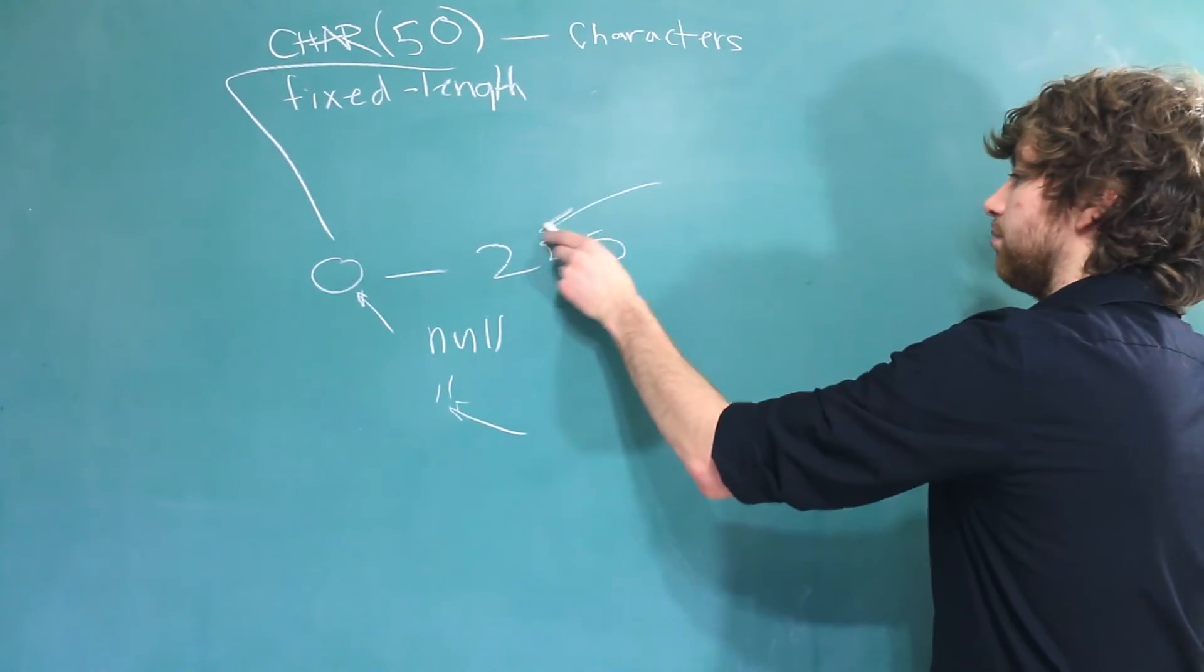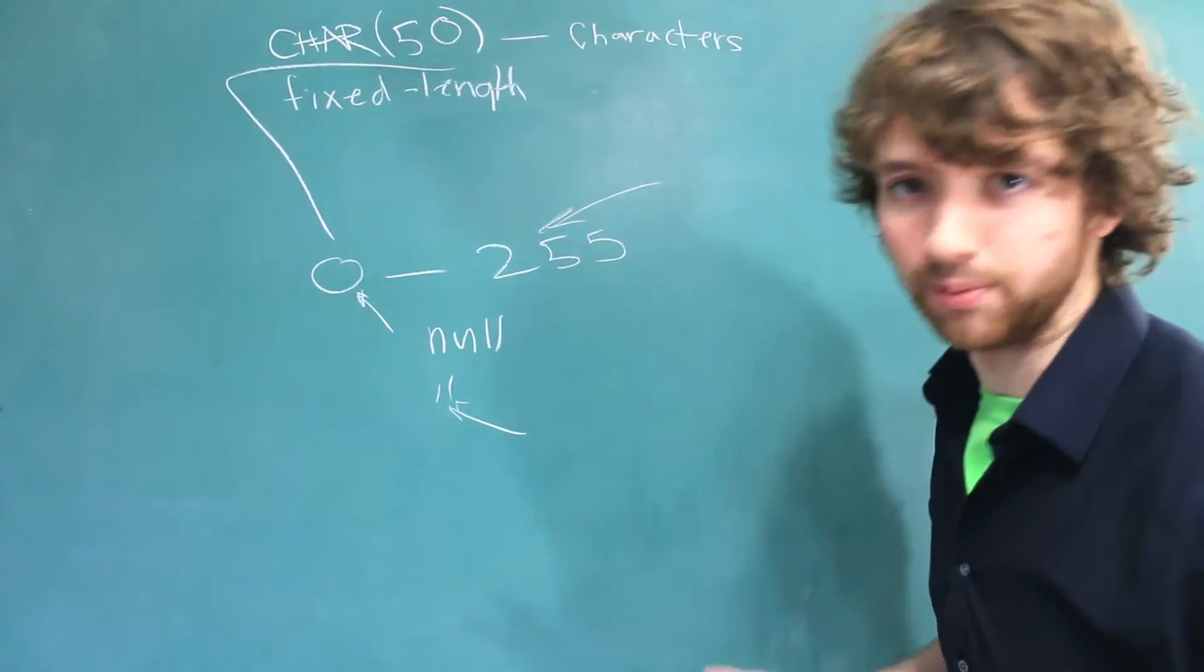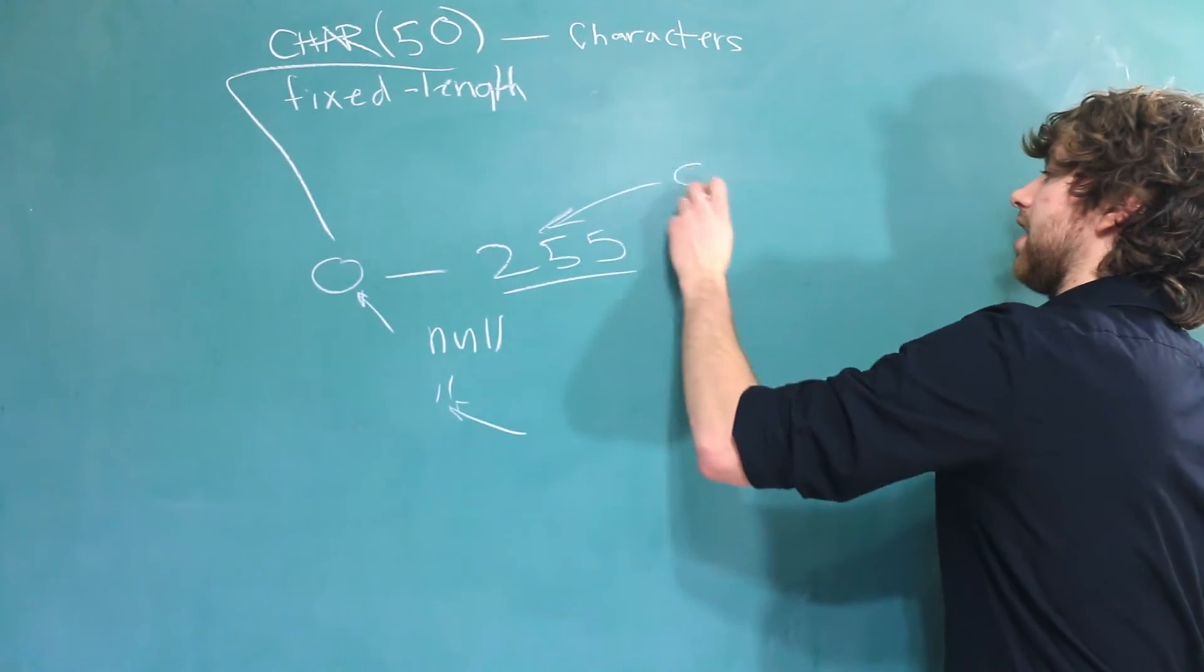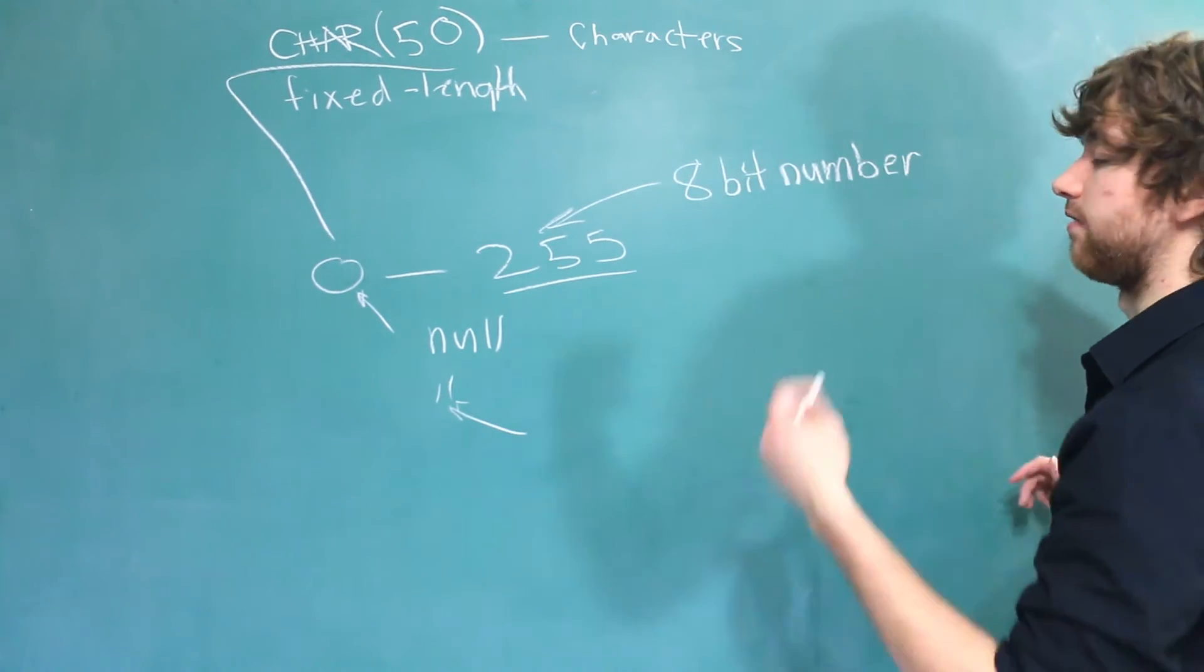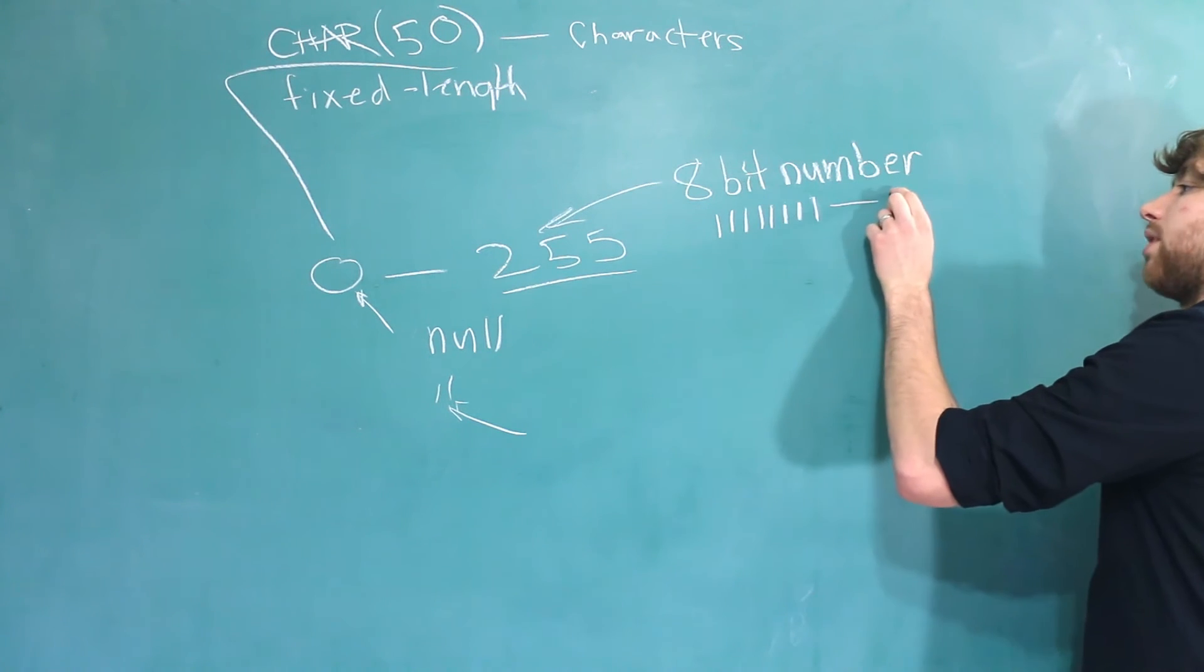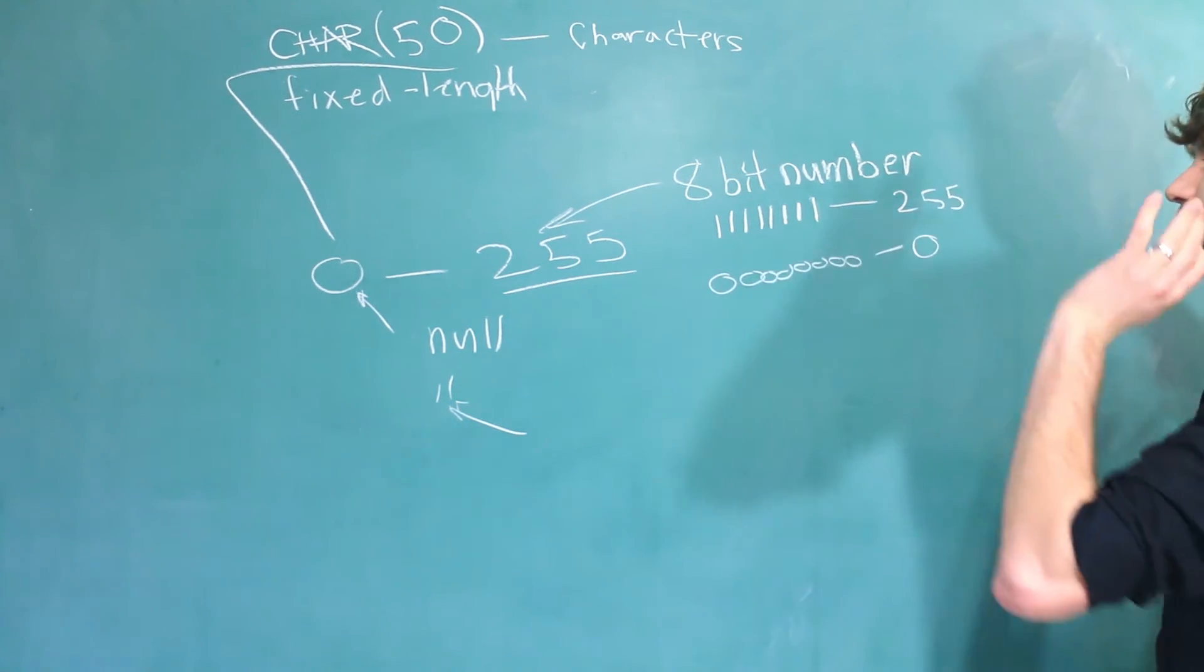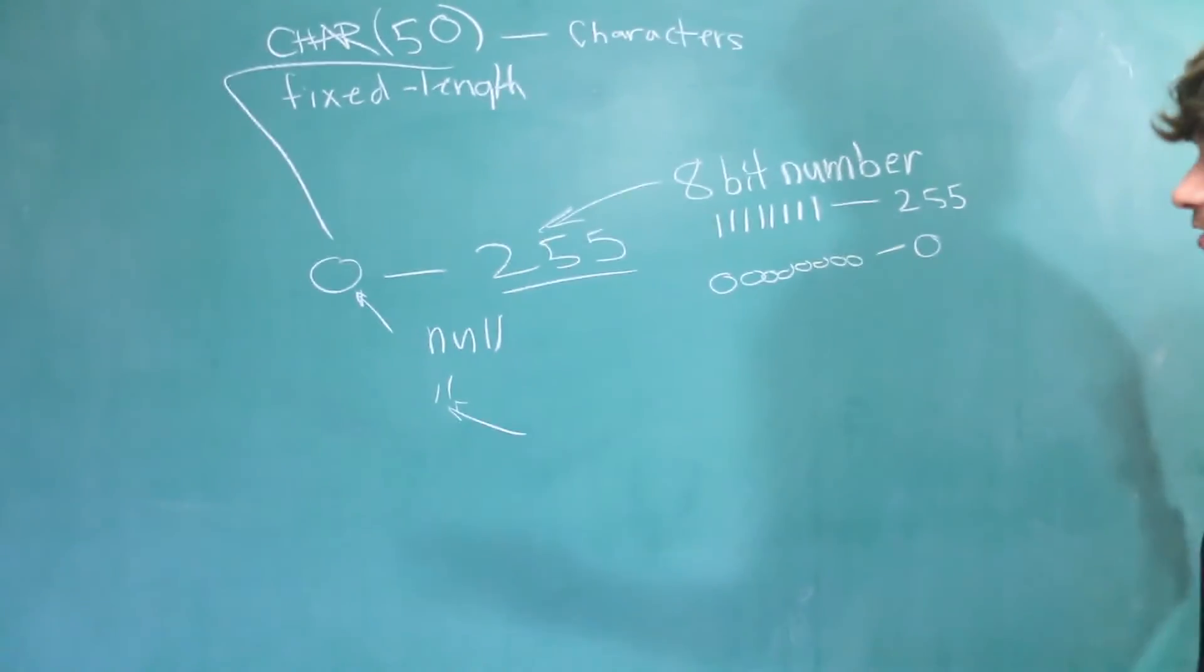255. Where does that number come from? Well this has to do with binary. Which there's a lot of information in this video. So I'll try not to overwhelm you with binary now. But this is the maximum number for an 8 bit number. So in binary you could have 0s or 1s. So if we have 8 1s this number represents 255. Zero on the other hand would be this. But the goal of this video is not to teach you binary. I do have other videos over that if you're interested.